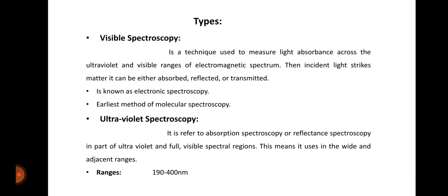Its types are visible spectroscopy. It is a technique used to measure light absorbance across the ultraviolet and visible ranges of electromagnetic spectrum. When incident light strikes matter, it can be either absorbed, reflected, or transmitted. It is known as electronic spectroscopy. It is the earliest method of molecular spectroscopy.